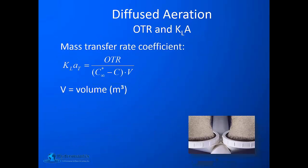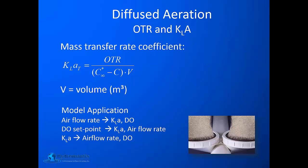Once we have determined the oxygen transfer rate, we use the standard equation for estimating KLA: oxygen transfer rate divided by the driving force, divided by the volume of the tank. The model can be applied in different ways: the user can specify air flow rate to estimate KLA and DO; start with a DO set point to estimate KLA and air flow rates; or enter direct KLA values to estimate air flow rate and DO concentration.